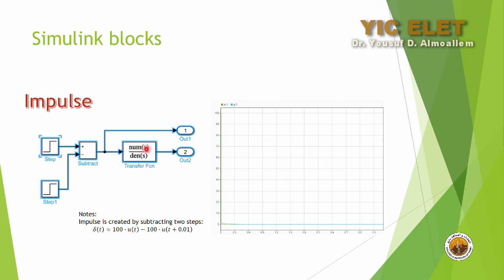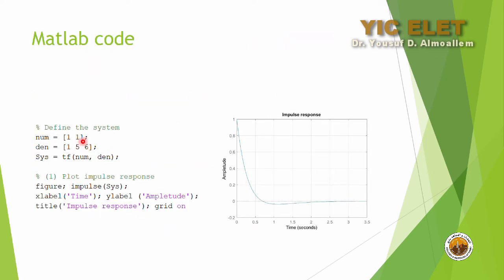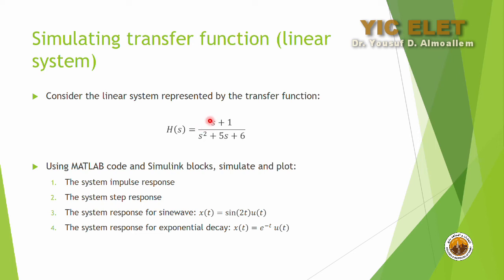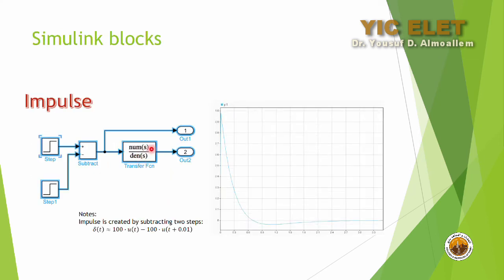In the transfer function block, you define the numerator and denominator coefficients. For example, the coefficient of s² is 1, the coefficient of s¹ is 5, and the coefficient of s⁰ is 6 — so the denominator is [1 5 6] and the numerator is [1 1]. The block diagram parameters show a final value of 100 for both steps, a step time of 0 for the first and 0.01 (i.e., 1/100 seconds) for the second.